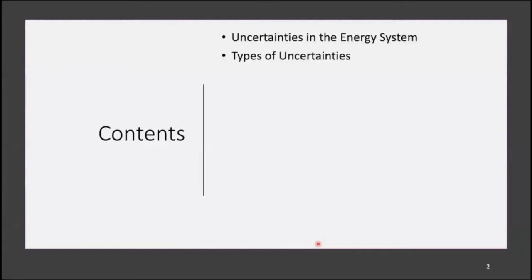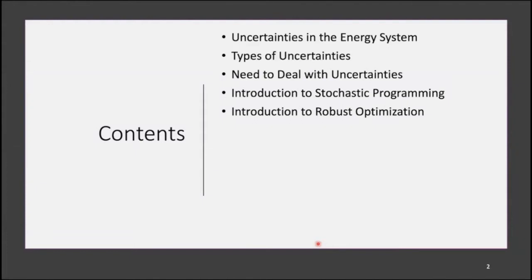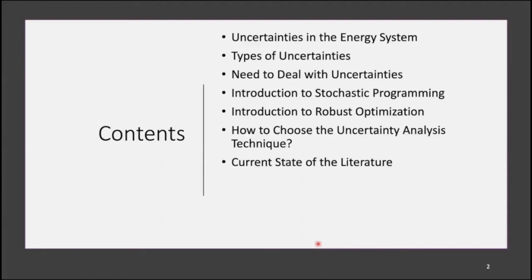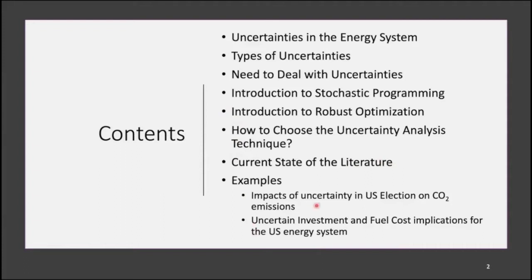Let me go through the contents. First, we are going to talk about the uncertainties in the energy system and their types. Second, we'll discuss why we need to deal with those uncertainties and how to. Third, we'll talk about how to choose a particular uncertainty analysis technique. Then we'll discuss the state of the literature, and lastly I have two examples: one about uncertainty in the US election, and one about uncertainty in investment cost and fuel cost and how it affects capacity expansion decisions.